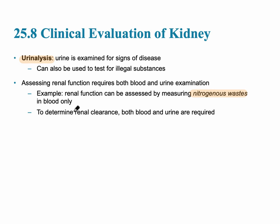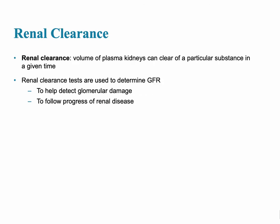Renal clearance is essentially how efficiently the kidney removes substances, and determining it requires both blood and urine samples. The definition of renal clearance is the volume of plasma that the kidneys can clear of a particular substance in a given time. This is important to detect glomerular damage, prevent the progression of renal disease, and to determine the normal glomerular filtration rate, which should be about 125 milliliters per minute.